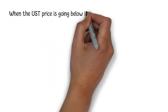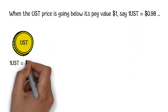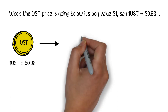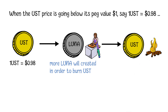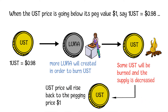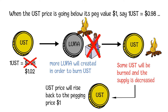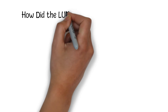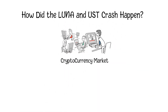When the UST price goes below its peg value of one dollar — say one UST equals 98 cents — more LUNA will be created in order to burn UST and decrease its supply. The increased supply of LUNA will dilute its price and make it decrease. Conversely, when the UST price is over one dollar, LUNA coins will be burned and more UST will be created to increase its supply and bring the price back down. In most cases, this process helps maintain price equilibrium between the UST and LUNA pair.